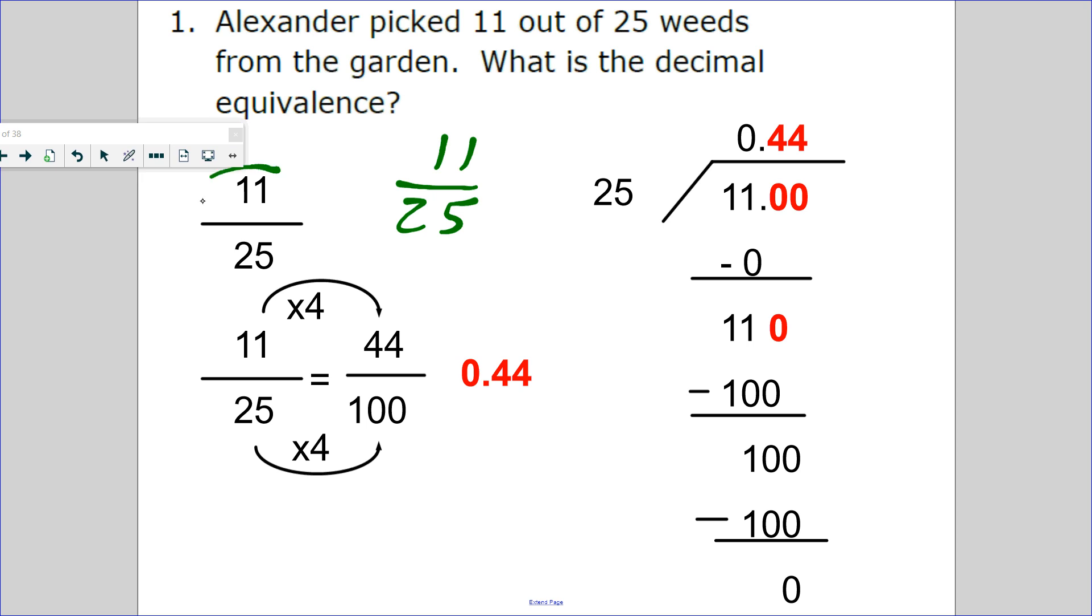Well, the fraction equivalency is 11/25. So how can I write this as a decimal? It's 11 divided by 25. Which number goes inside? The top number, the numerator. So you have that divided by 25.